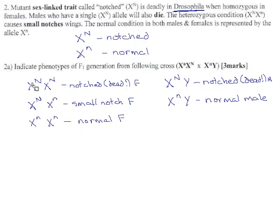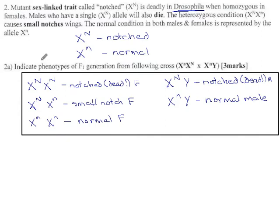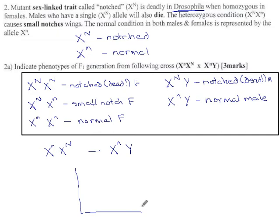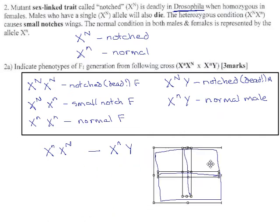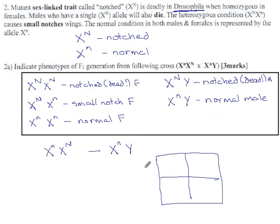So if all that is good, let's look at the actual question. We want the phenotypes of the F1 generation from the cross X^N X^n crossed with a normal male. It better be a normal male, because the other kind of male doesn't live long enough to become a dad. So there are the genotypes of the two parents, and we can Punnett square this easily enough. Mom contributes either X^n or X^N, and dad contributes X^n or Y.